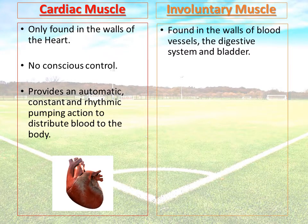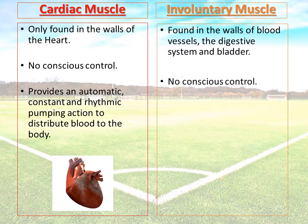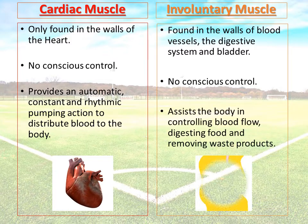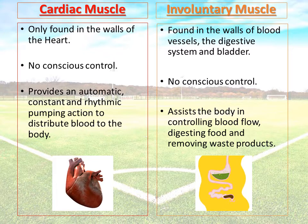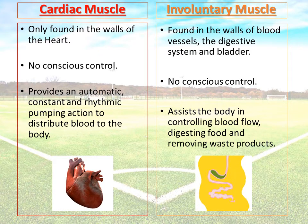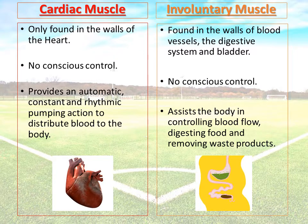Involuntary muscle is found in various places such as the walls of blood vessels — arteries, veins and capillaries — as well as the digestive system and bladder. Equally, there's no conscious control over this. It assists the body in controlling blood flow, digesting food and removing waste products. The animation on screen shows a basic representation of how muscles in the digestive system push food through the process until it becomes a waste product.